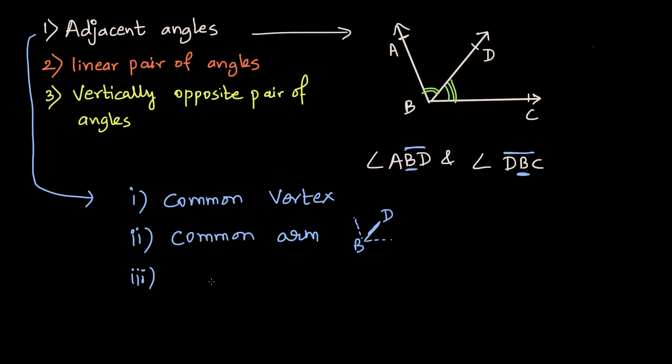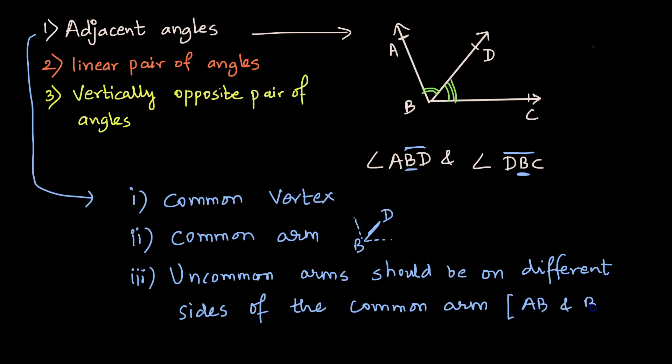The third thing to remember about adjacent angles is that the uncommon arms should be on different sides of the common arm. So uncommon arms are AB and BC. These AB and BC arms are on different sides of arm BD, which is the common arm.